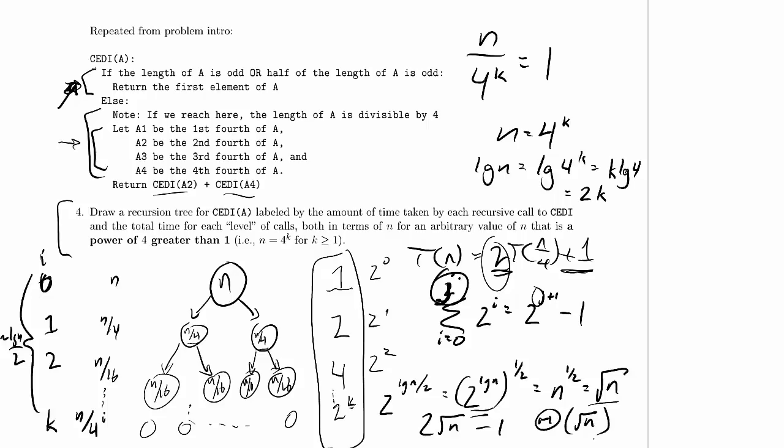So this takes theta of square root of n time. Oh, excuse me. We haven't been asked for a bound yet, but I'm going to be careful saying theta here. Let's just put a question mark on this. Is this really theta?